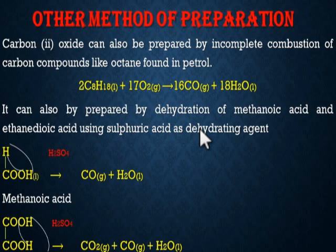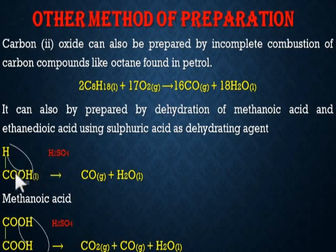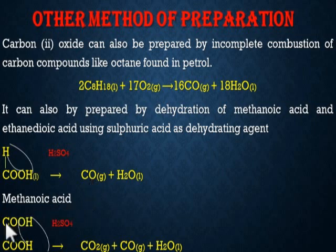Carbon monoxide can also be prepared by dehydration of methanoic acid (HCOOH) and ethanedioic acid using sulfuric acid as a dehydrating agent. Dehydration means removal of water. The formula HCOOH is methanoic acid. In the presence of sulfuric acid as a dehydrating agent, the methanoic acid is dehydrated by removal of water: the O and H combine with H to give H₂O (water), and what is left is CO, which is carbon monoxide. In the second reaction, ethanedioic acid (COOH)₂ is also dehydrated with sulfuric acid, where the OH groups combine to give H₂O liquid.